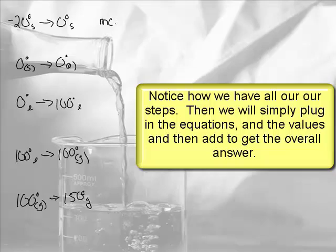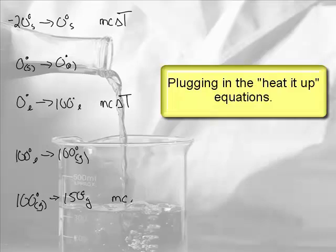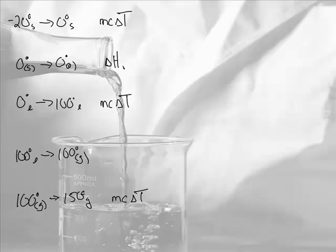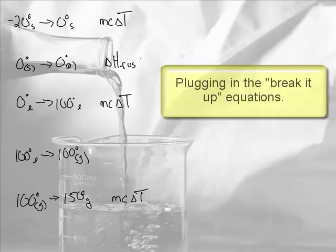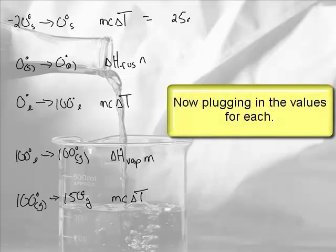Now we can just plug in our equations here. This is a heated up equation, so MC delta T, and actually three are MC delta T. This is a break it up, so this is delta H fus times N, and this is delta H vap times N. Now we're going to just plug these in and add them together.